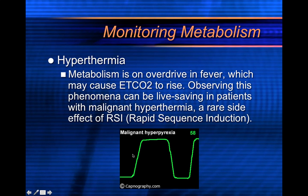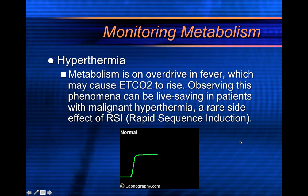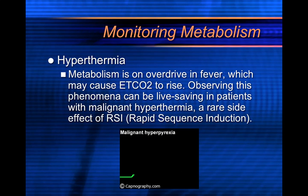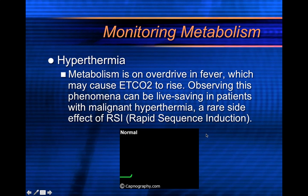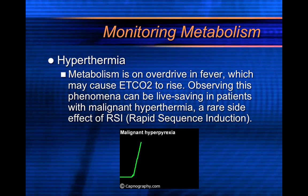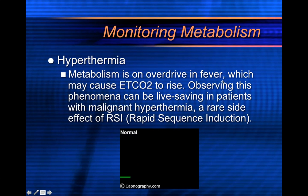The malignant hyperthermia patient — it's a rare side effect of RSI, rapid sequence induction. When you're trying to intubate somebody using a depolarizing paralytic such as succinylcholine, you need to be very careful of malignant hyperthermia. Usually these patients will have a disorder they know about and will tell you their history if you can get it from them or their family. Generally, you don't want to intubate those patients using RSI.